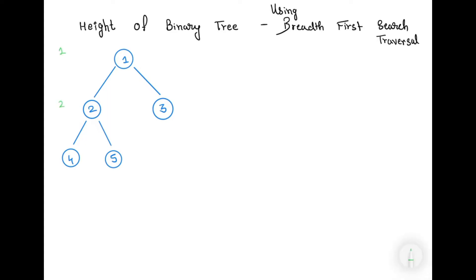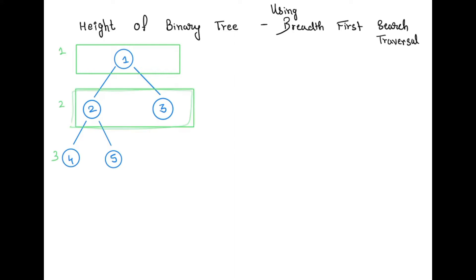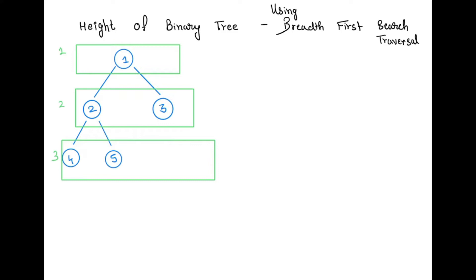The height will be 3: level 1, 2, and 3. For breadth-first search, we go for the breadth instead of the depth. For every level, we traverse from left to right. We traverse the root first, then at the next level we traverse nodes 2 and 3, and then the next level gives us nodes 4 and 5.